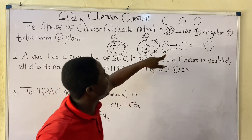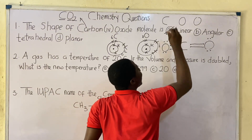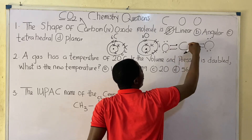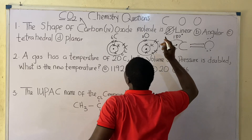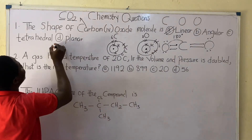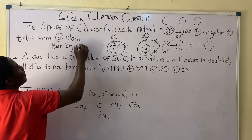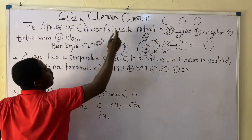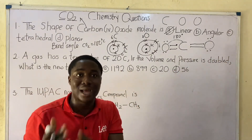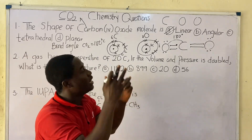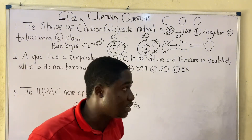The shape of CO2 is linear. The bond angle between oxygen-carbon-oxygen is 180 degrees because the molecule is in a straight line. So the bond angle of CO2 is 180°. The Lewis structure confirms the shape is linear.